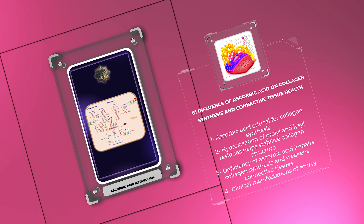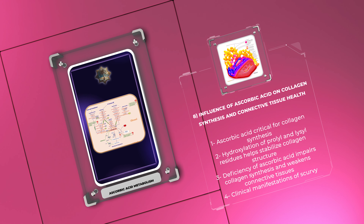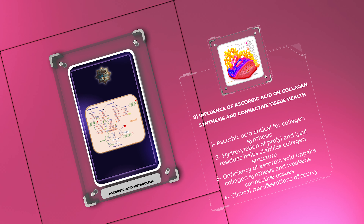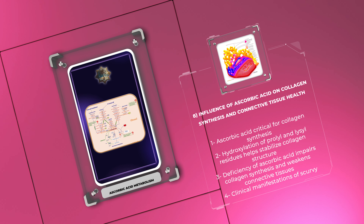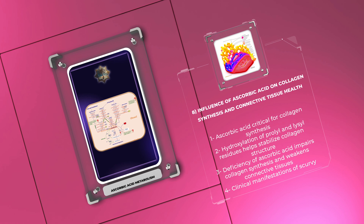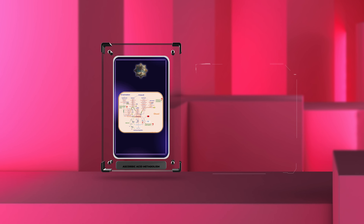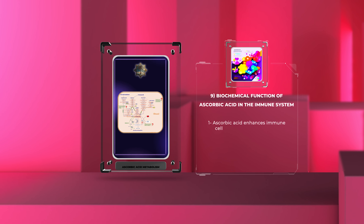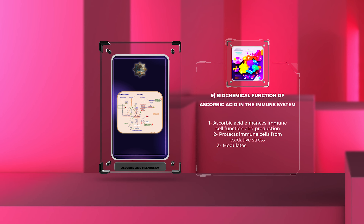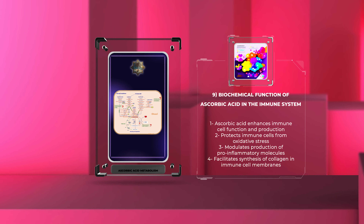Deficiency of ascorbic acid can lead to impaired collagen synthesis, resulting in weakened connective tissues and contributing to clinical manifestations of scurvy such as poor wound healing, bleeding gums, and joint pain. Ascorbic acid plays multifaceted roles in supporting the proper functioning of the immune system.